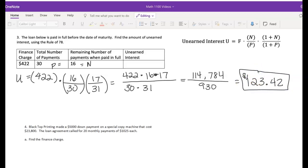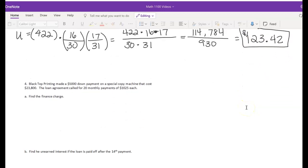Now I can divide and I get an unearned interest of $123.42. And that's where that question had us stop. One more question for this section.